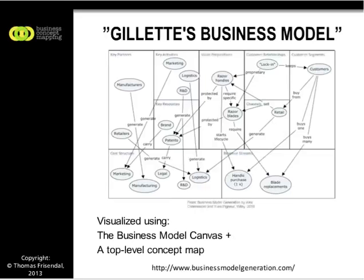What you see here is an illustration of how to combine concept mapping and business models using the Business Model Canvas. This is actually the famous, and somewhat wrong, business model for Gillette — the company selling razors and razor blades — who invented the lock-in.